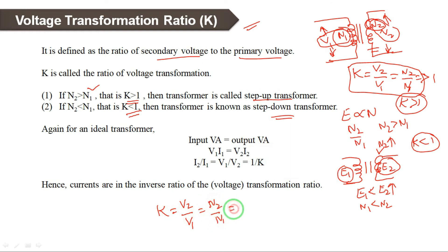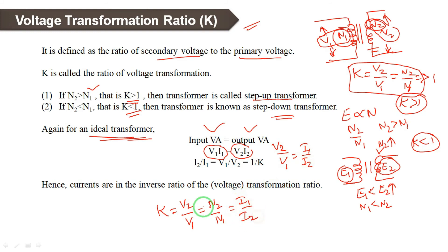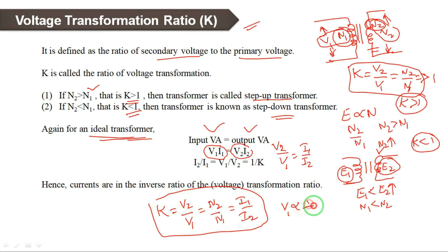Transformation ratio K equals V2 by V1, which equals N2 by N1. For an ideal transformer, input power equals output power in volt-amperes. So V1 times I1 equals V2 times I2. From this relation, V2 by V1 equals I1 by I2. This means voltage is inversely proportional to current.